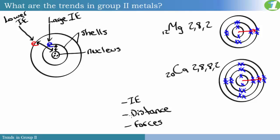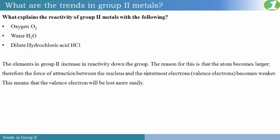The elements in group 2 increase in reactivity down the group. Reactivity increases down the group for group 2 elements because atomic radius increases — that is, the atom becomes larger. If the atomic radius increases, then the force of attraction between the nucleus and the valence electrons is weaker, and this means the valence electrons will be lost more easily. So reactivity increases down the group based on these three main factors. Let's examine reactions with oxygen.